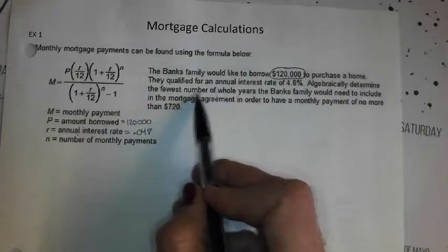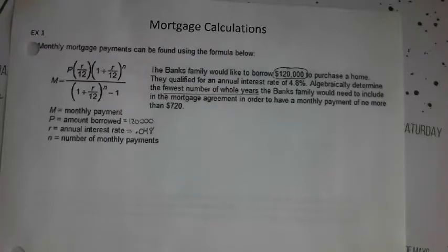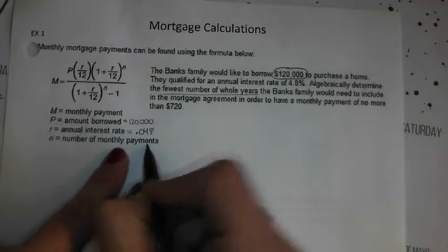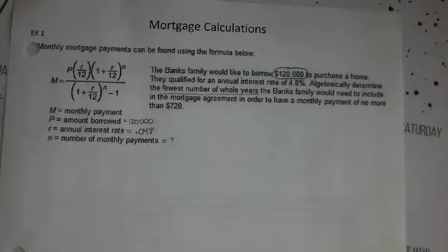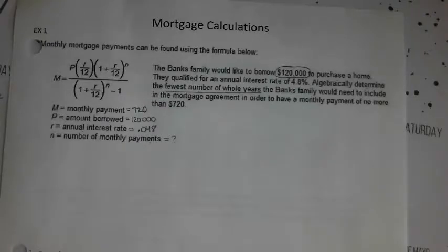Algebraically determine the fewest number of whole years. So they're looking for which variable essentially are we going to have to find? Maggie? Yes, we're going to have to find this. We're going to have to adjust though because N is going to be the number of monthly payments and they're asking for the number of full years, but we'll get there once we find N.